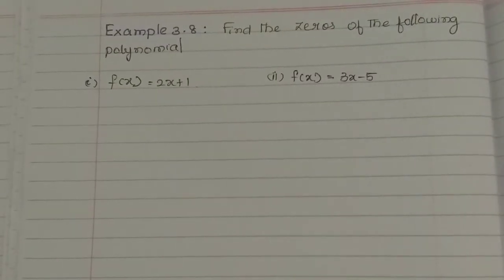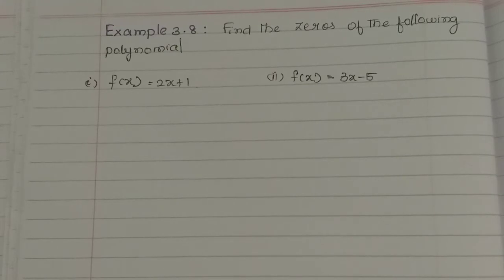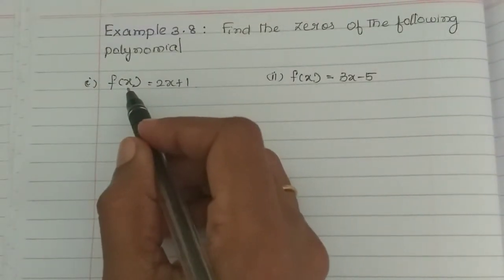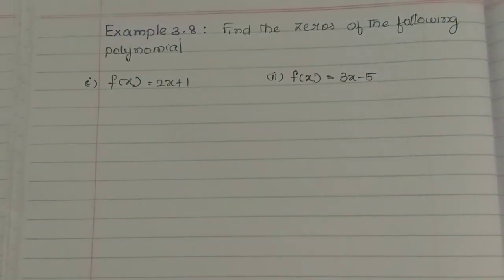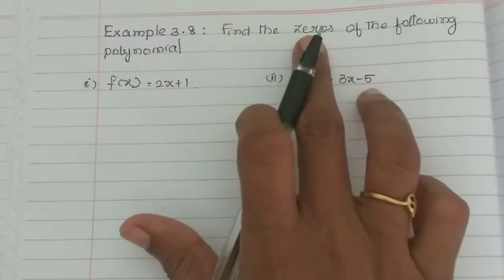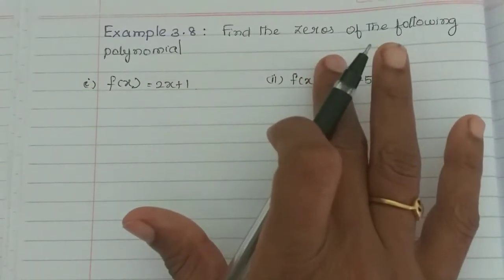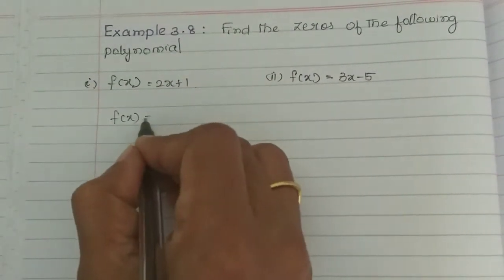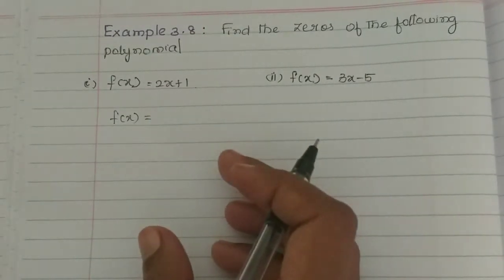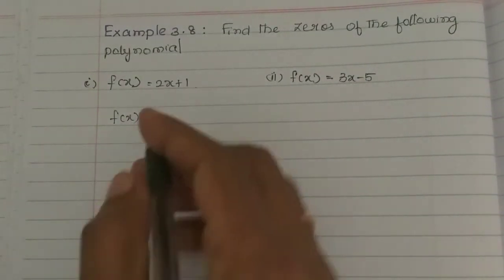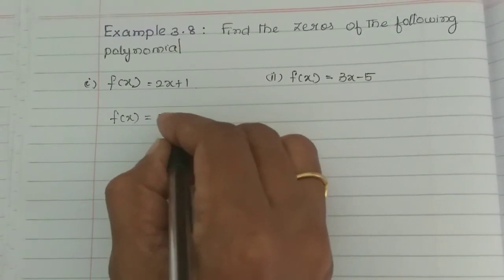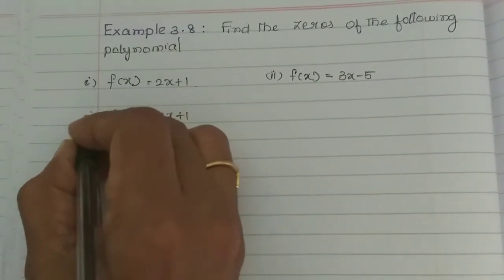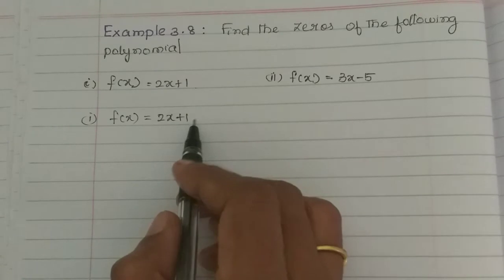Hello students. In this video, example 3.8: Find the zeroes of the following polynomial. If you want to find the zeroes of the polynomial, you can use the trial and error method. Here, the first subdivision is 2x plus 1.